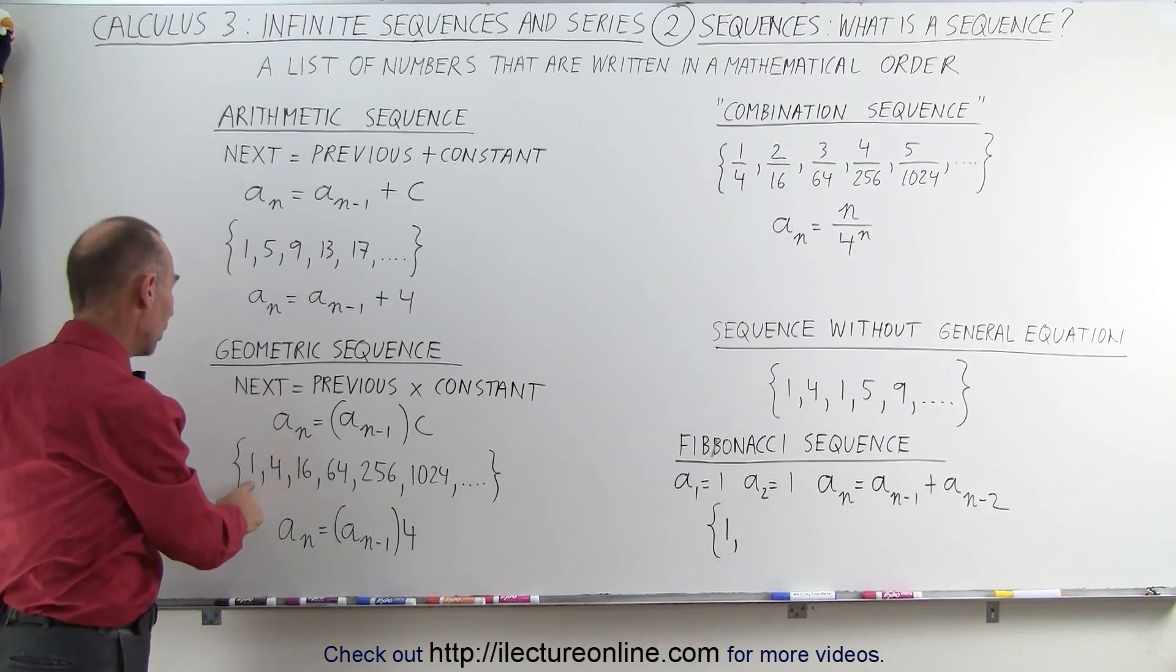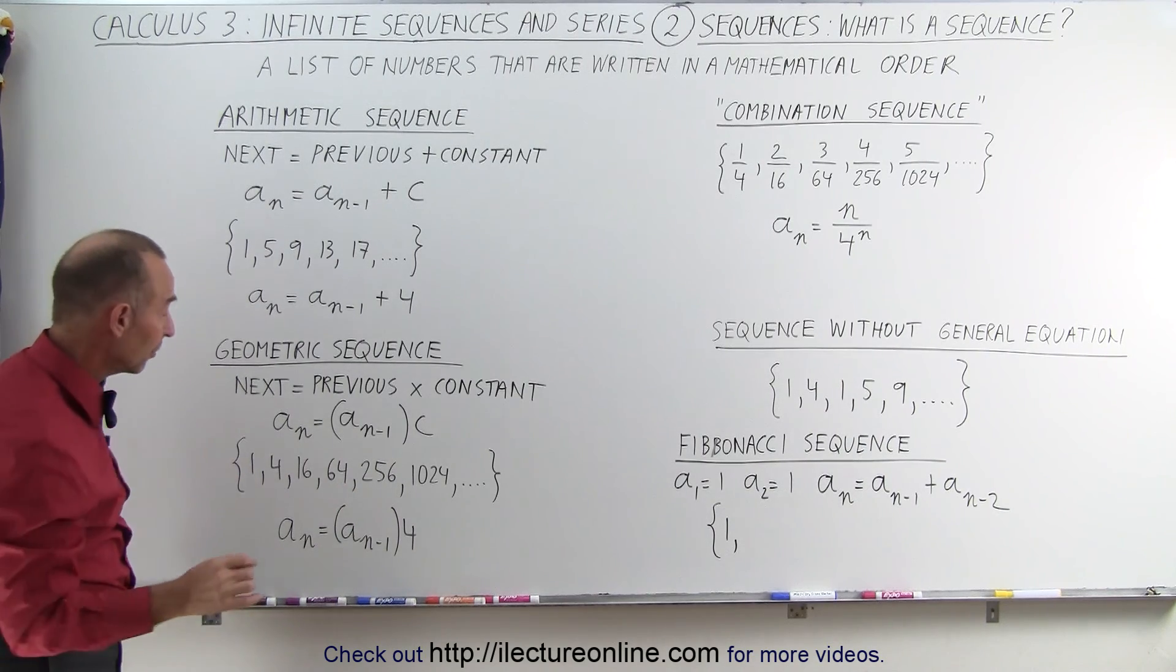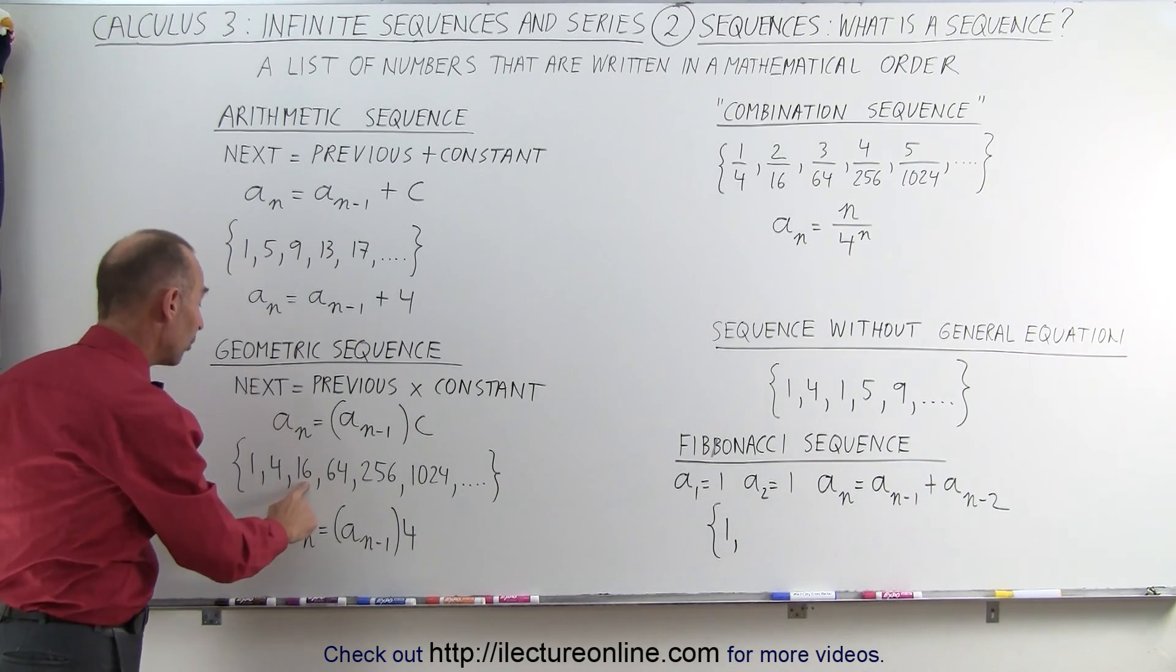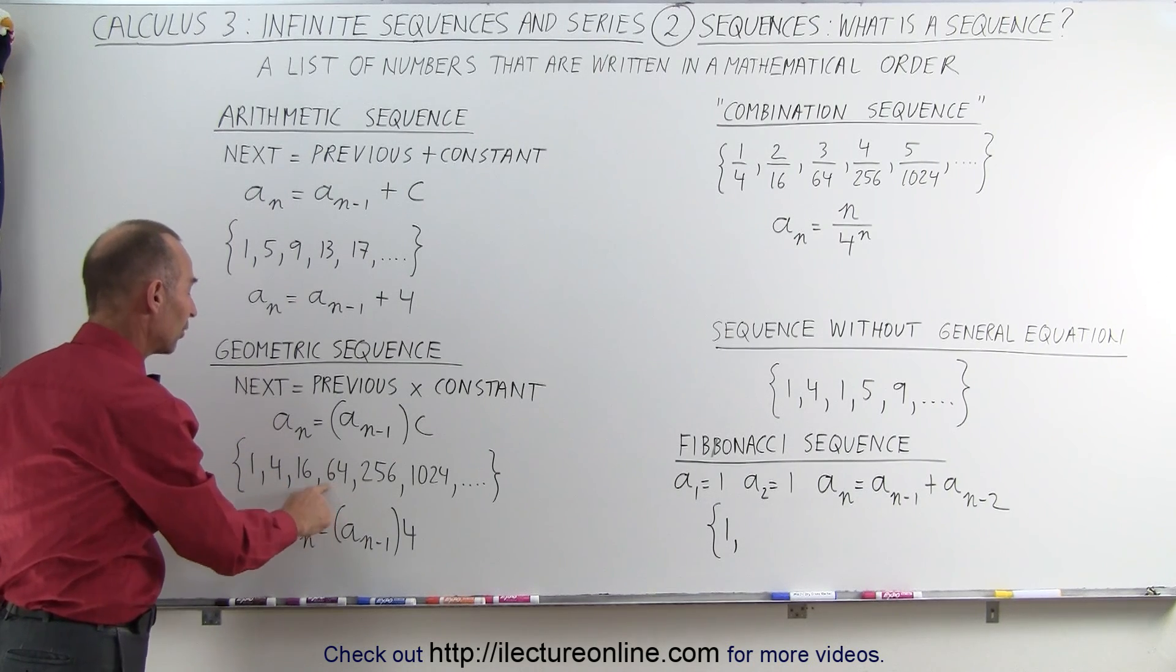So here if you look at 1, 4, 16, 64, 256, if you look at it long enough, you begin to realize that the next number is 4 times as big as the previous number. 64 is 4 times 16, 256 is 4 times 64, and so forth.